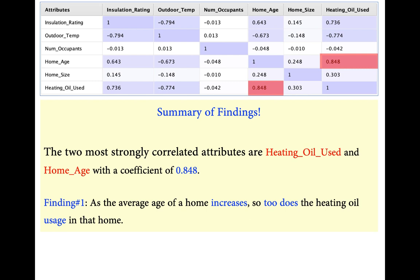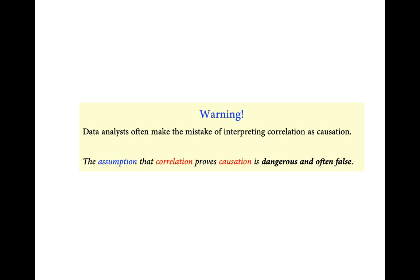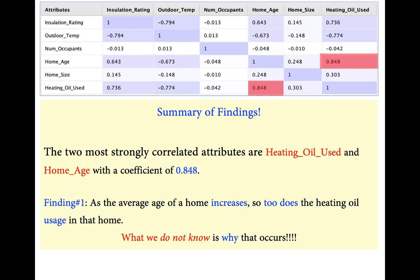Our first finding: as the average age of a home increases, so does the heating oil usage in that home. That makes sense. However, correlation will not tell us why this occurs — it only states the relationship, not the reason behind it.